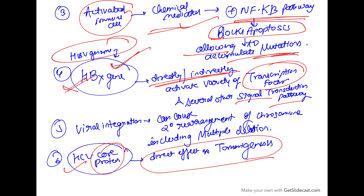Similarly, in HCV, the HCV core protein also has a direct effect on tumorigenesis. So there are two important virus-specific factors: the HBx gene in the HBV genome, and the HCV core protein in HCV. One more factor is viral integration — it can cause secondary rearrangement of chromosomes, promoting tumor growth, and this rearrangement may include multiple deletions.